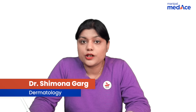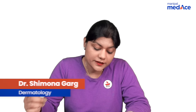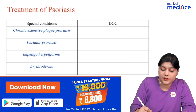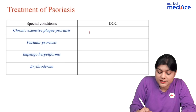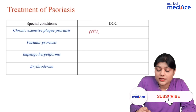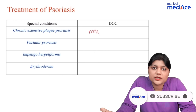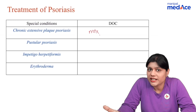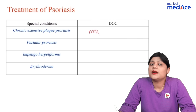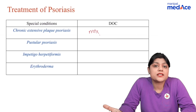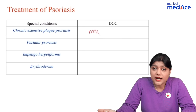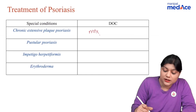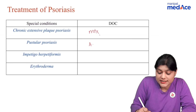For chronic extensive plaque psoriasis and for psoriatic arthritis, the drug of choice is methotrexate. The side effects of methotrexate include pancytopenia and GI toxicity, for which we give folic acid. The patient can also have reversible oligospermia and hepatitis.